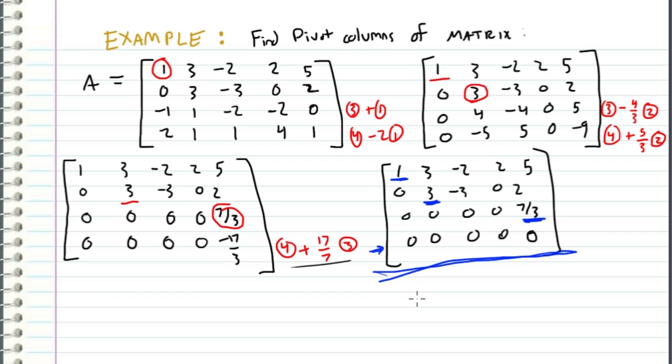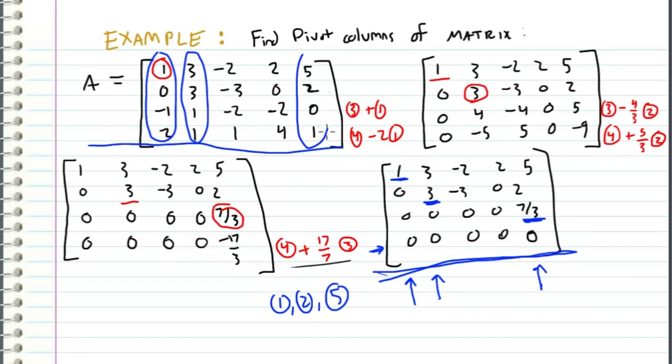So we can look at the columns now, and we find each column that contains a pivot, which are the first, second, and fifth columns. So we come back to our original matrix, and our pivot columns will be the first, second, and fifth vectors.